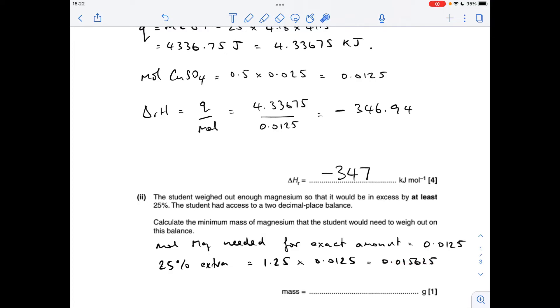Now we know the moles, we need to work out how many grams that is. Sorry, this is really squashed in here, but we've just multiplied the moles by the MR of magnesium, so that's how many grams you would need. But remember, we're using a two decimal place balance. So because of that, we would need to weigh out 0.38 grams.